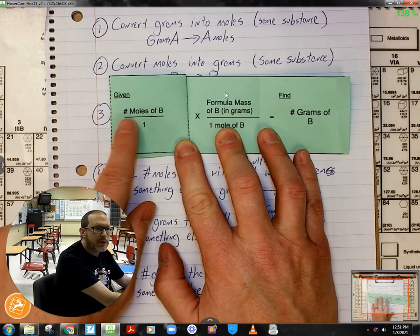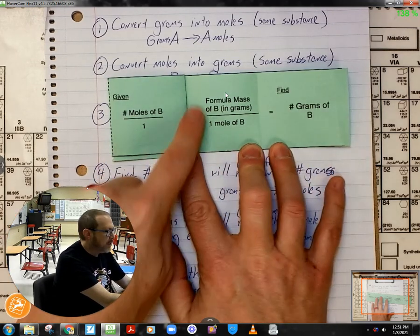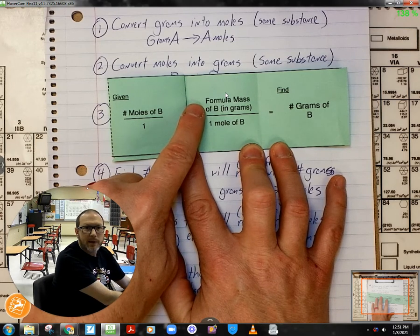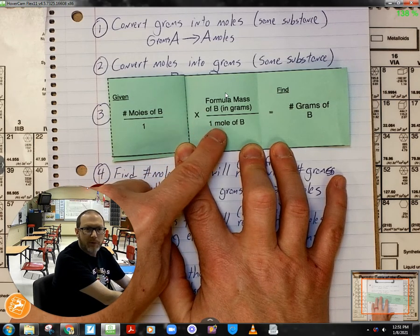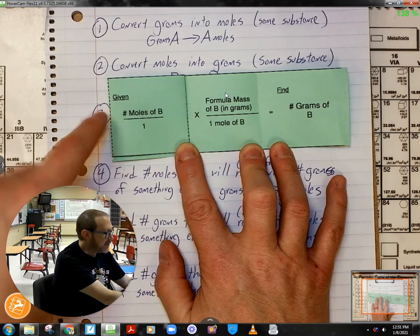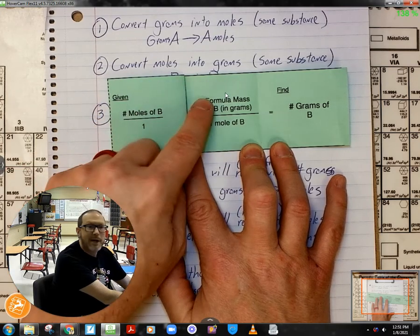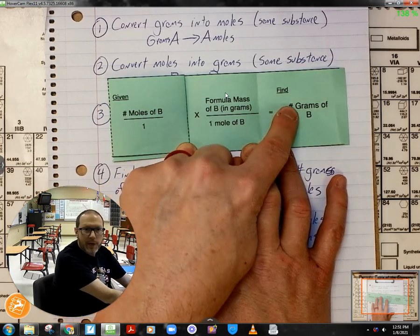And so I start with the number of moles I'm given. I'm going to put the molar mass on top and then over one mole of B so we can cancel units. So in this case it's just going to be moles times the molar mass to turn it to grams.